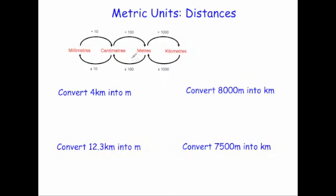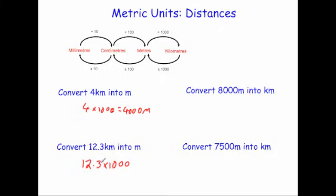Now we're going to convert between kilometres and metres. First, convert 4 kilometres into metres. To go from kilometres to metres you multiply by 1000 — remember, 'kilo' means a thousand — so 4 times 1000 equals 4000 metres. Next, convert 12.3 kilometres into metres: 12.3 times 1000 — move the decimal place three times — equals 12,300 metres.